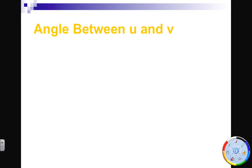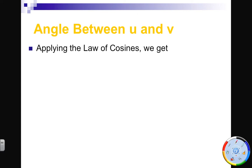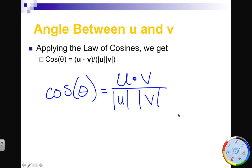Let's see where we might use the dot product. One area is finding the angle between two vectors. Using the law of cosines, the formula is: cosine theta equals u dot v over the magnitude of u times the magnitude of v. To find theta, take the cosine inverse of that expression. Since u dot v, magnitude of u, and magnitude of v are all numbers, this entire fraction is just a number — taking cosine inverse of it is no big deal.